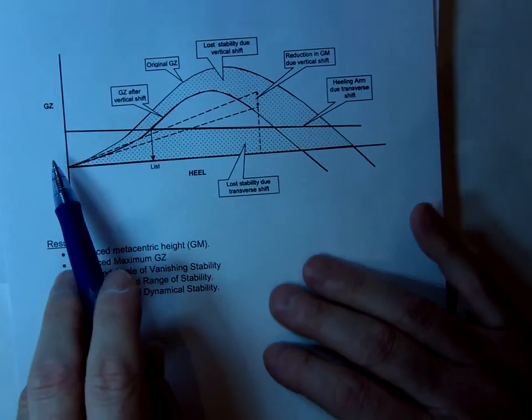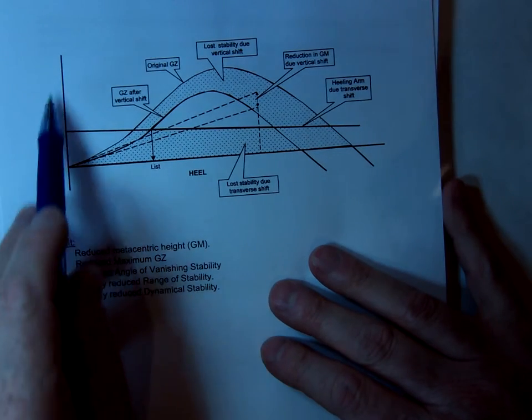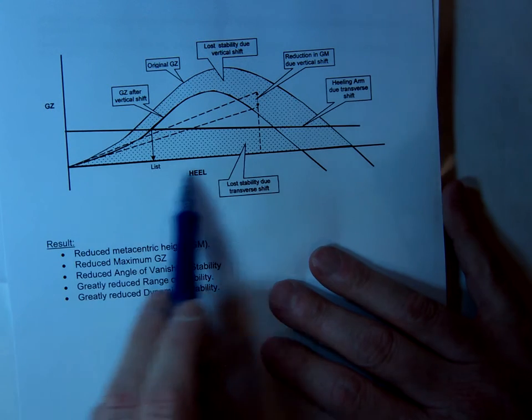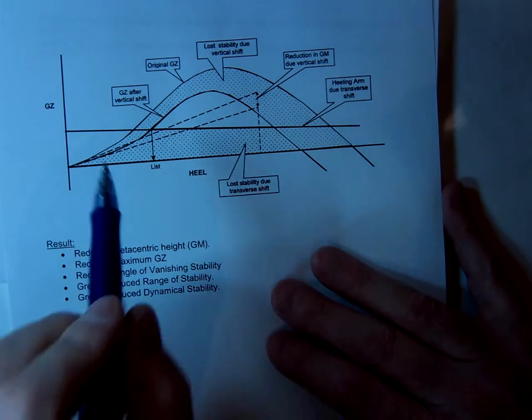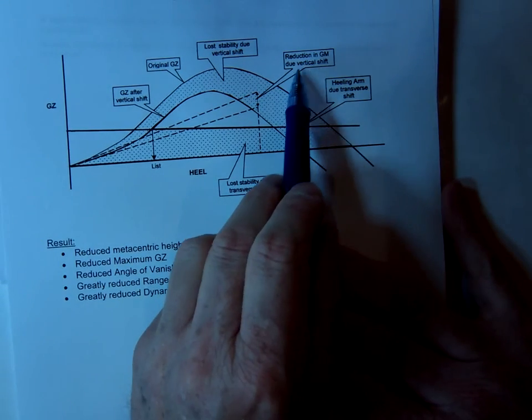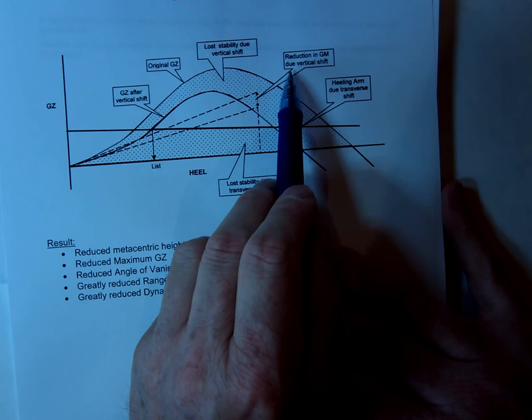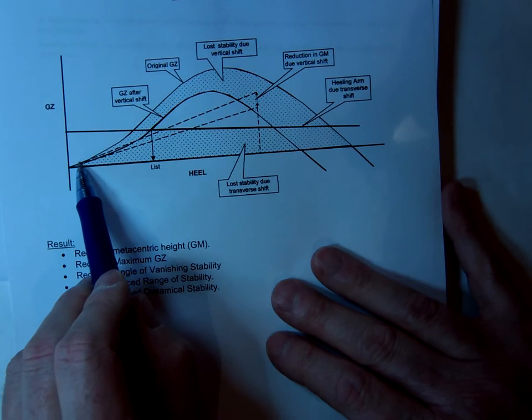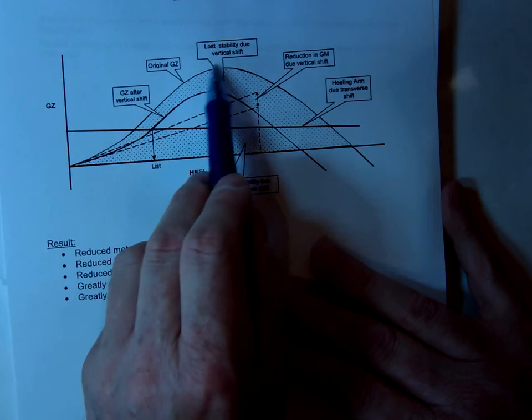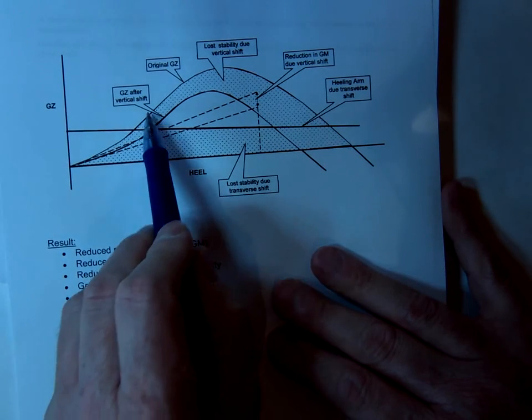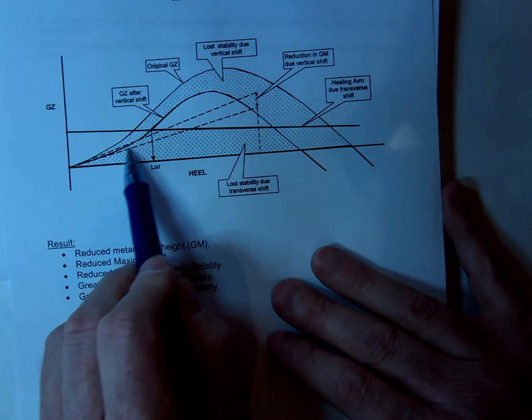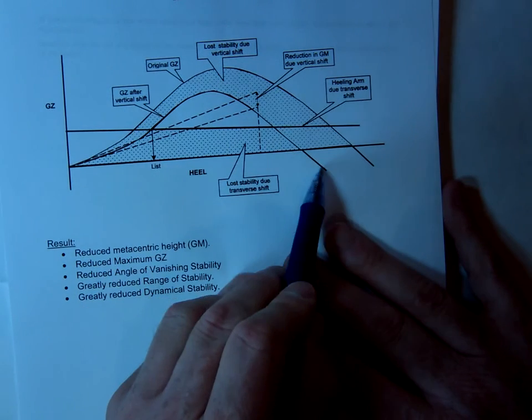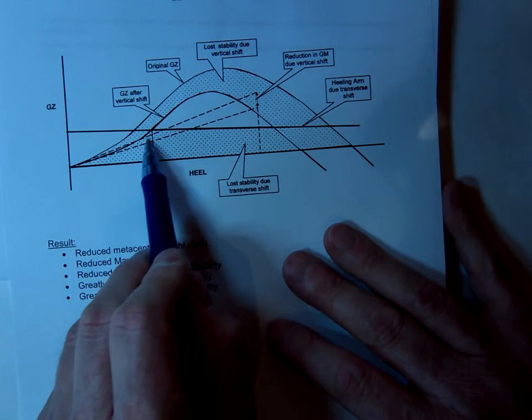So if we look at our curve here, there's the GZ values on the Y axis, angle of heel along here. That's the reduction in the GM due to the vertical shift. So there's our original curve here. The GM is reduced. So now that's the new curve there.